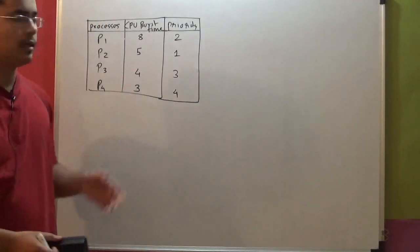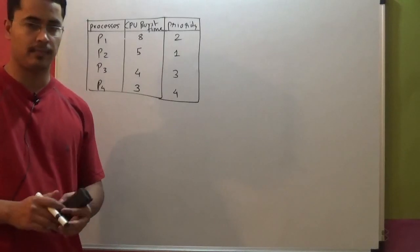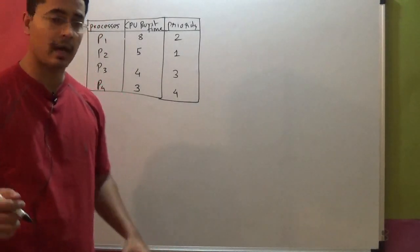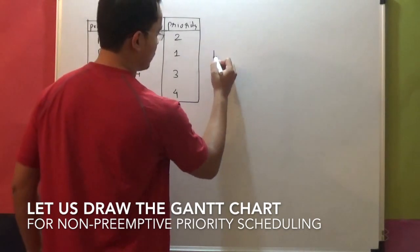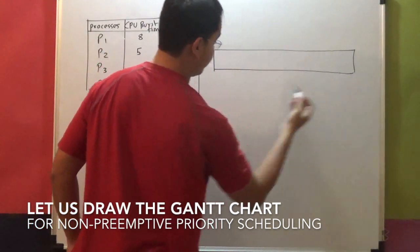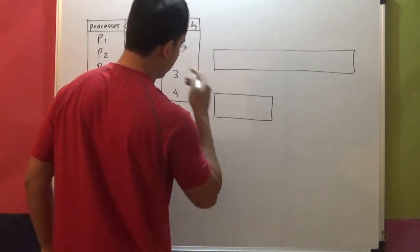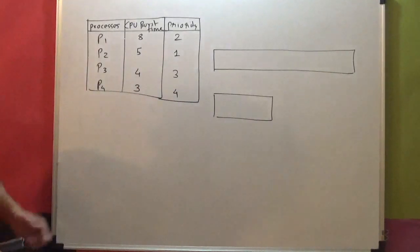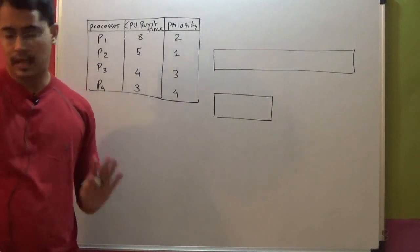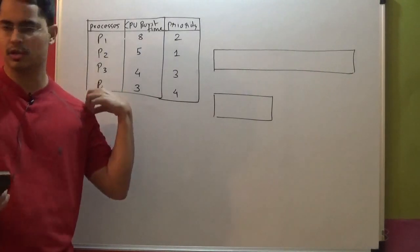But before we do all that, we must draw Gantt chart. So I am gonna dedicate this space towards drawing the Gantt chart. And we will also observe to maintain the queue. First thing first, arrival times are not given, that means all the processes have arrived at the same time, we will have to assume that.